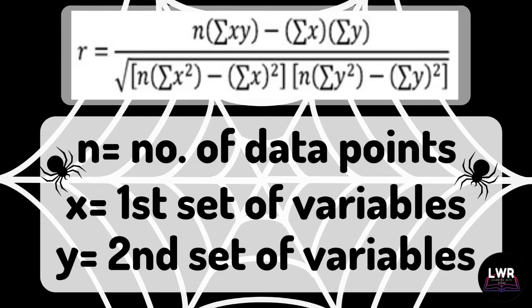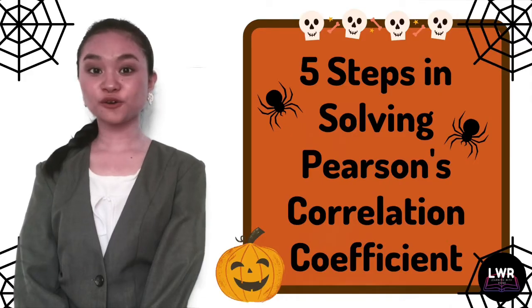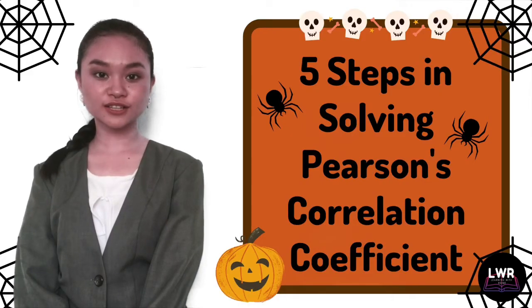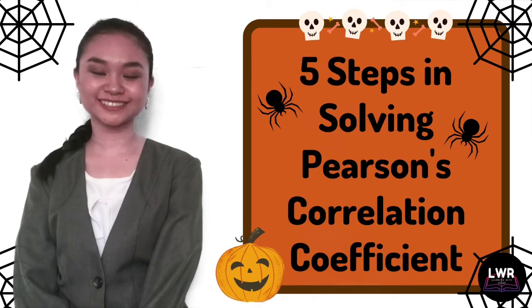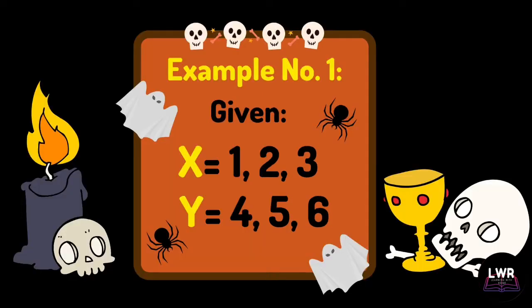Wherein n is the number of data points, x is the first set of variables, and y is the second set of variables. Now, let us discuss the five steps in solving Pearson's correlation coefficient. To guide us with the steps, here is example number one.